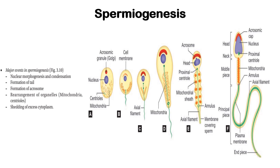Spermiogenesis is the maturation of the spermatids into a normal morphological sperm cell. The round spermatid needs to attain a functional structure. There are major events that occur: the first is nuclear morphogenesis, or condensation, in which the nucleus condenses and becomes thick. The next event is formation of the tail.